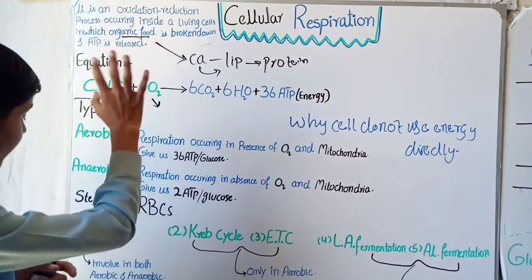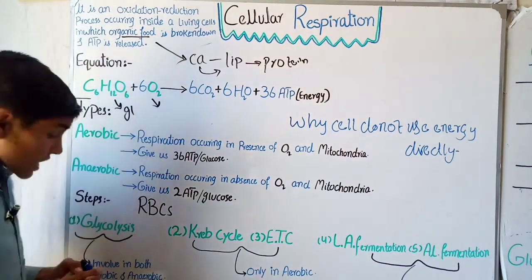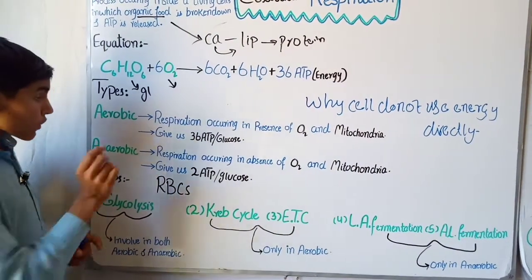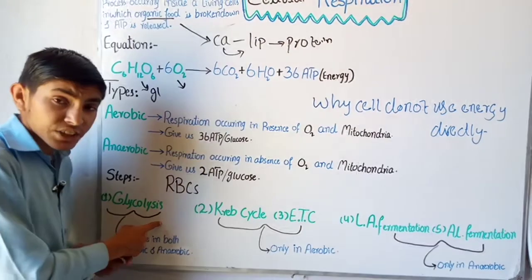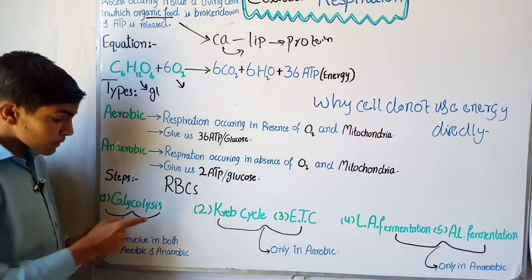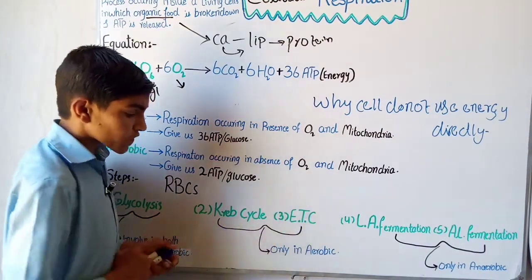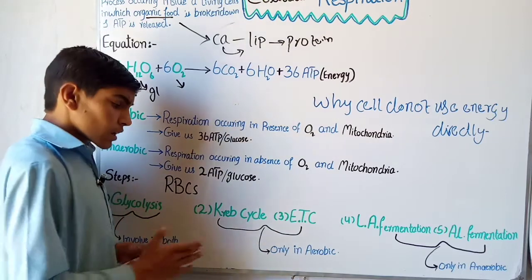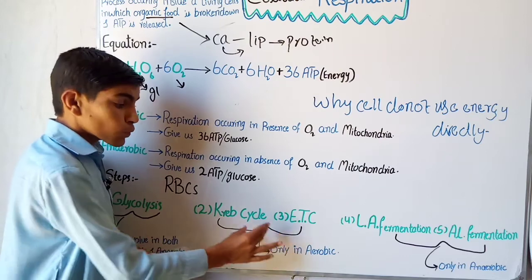If we talk about the steps, cellular respiration mainly occurs in five steps. The first is glycolysis, which is involved in both aerobic and anaerobic respiration. Oxygen is not required for glycolysis, and it mainly occurs in the cytoplasm of the cell. The next steps are the Krebs cycle and the electron transport chain, which occur only in aerobic respiration because they require O2, so they occur inside the mitochondria.